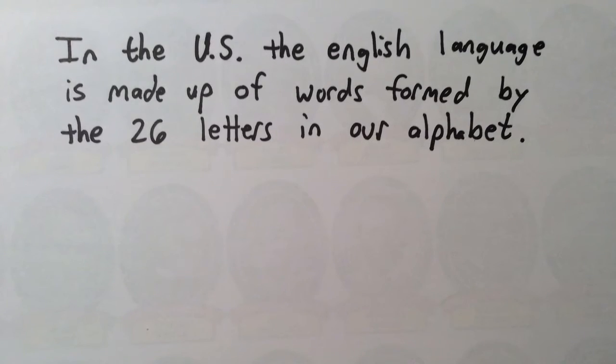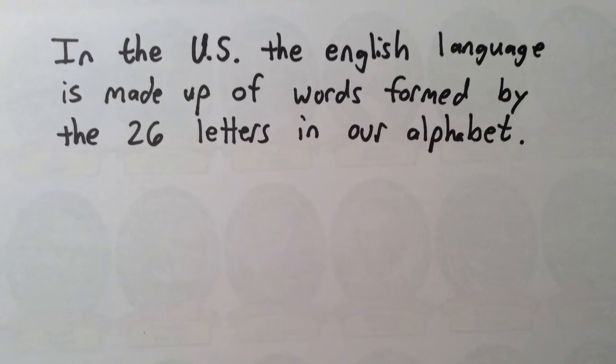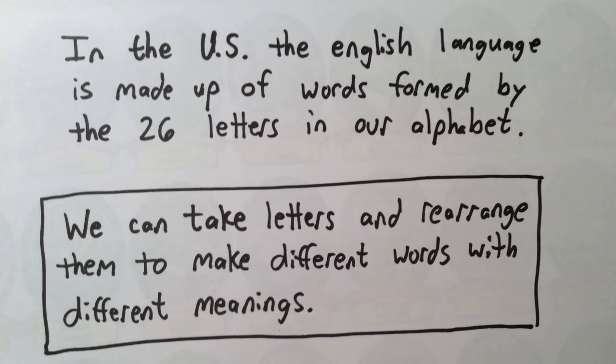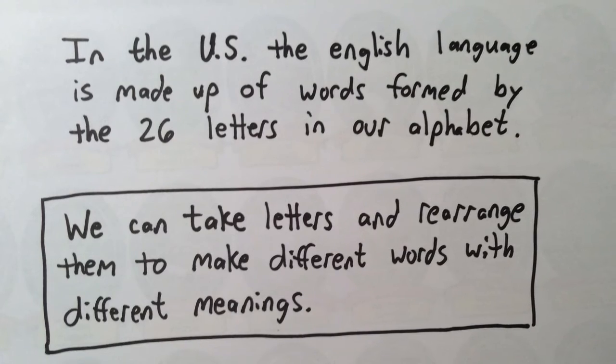In the United States, the English language is made up of words formed by the 26 letters in our alphabet. We can take letters and rearrange them to make different words with different meanings.